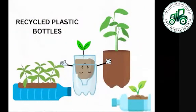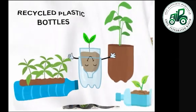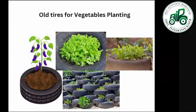Recycled plastic bottles — such as used mineral water bottles — can serve as containers. Old tires can also be used for vegetable farming instead of throwing them, burning them, or dumping them. As illustrated, a tire can be planted with eggplant, lettuce, and radish.